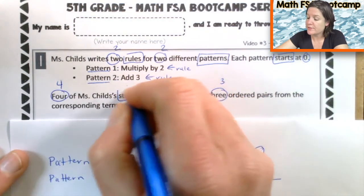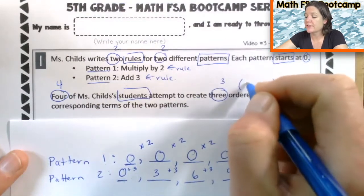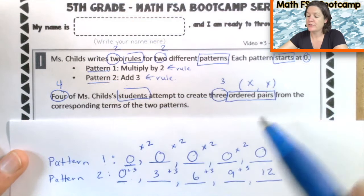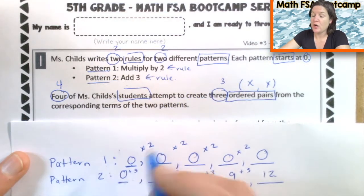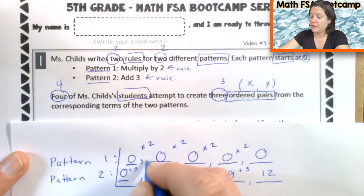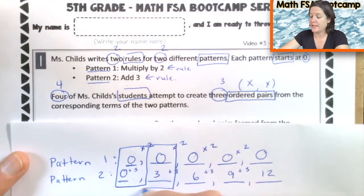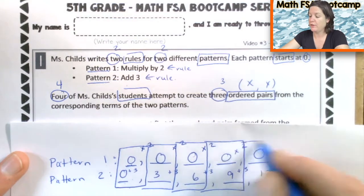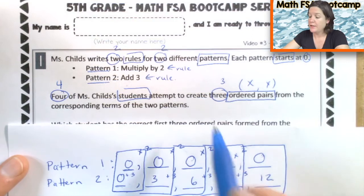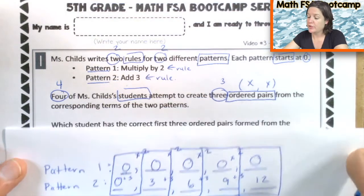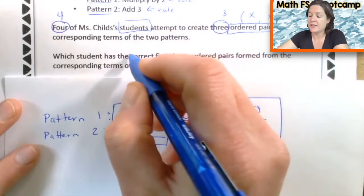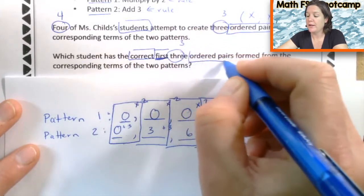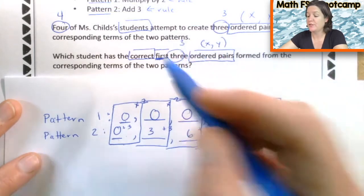So four students attempt to create three ordered pairs. Ordered pairs look like this. They have an x-coordinate and a y-coordinate. Mark up your text with me if you didn't already. Three ordered pairs from the corresponding terms. So the corresponding terms are here for pattern one and pattern two. This would be the corresponding term. The first term. This would be the second corresponding. These are all, they correspond with each other. The first, the second, the third, the fourth, and the fifth. Okay.